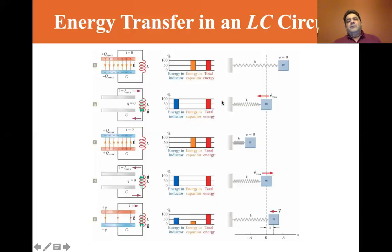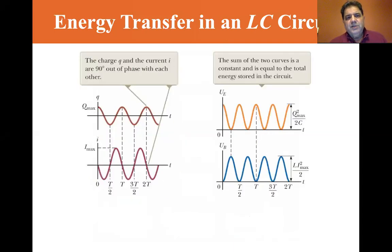Now let's go back to the inductor. They're comparing the spring oscillation going back and forth. In the spring, potential energy changes back and forth. You've got the energy in the inductor and the energy in the capacitor exchanging energy. So the charge Q and the current I are 90 degrees out of phase with each other, and the sum of the two curves is constant and equals the total energy in the circuit.